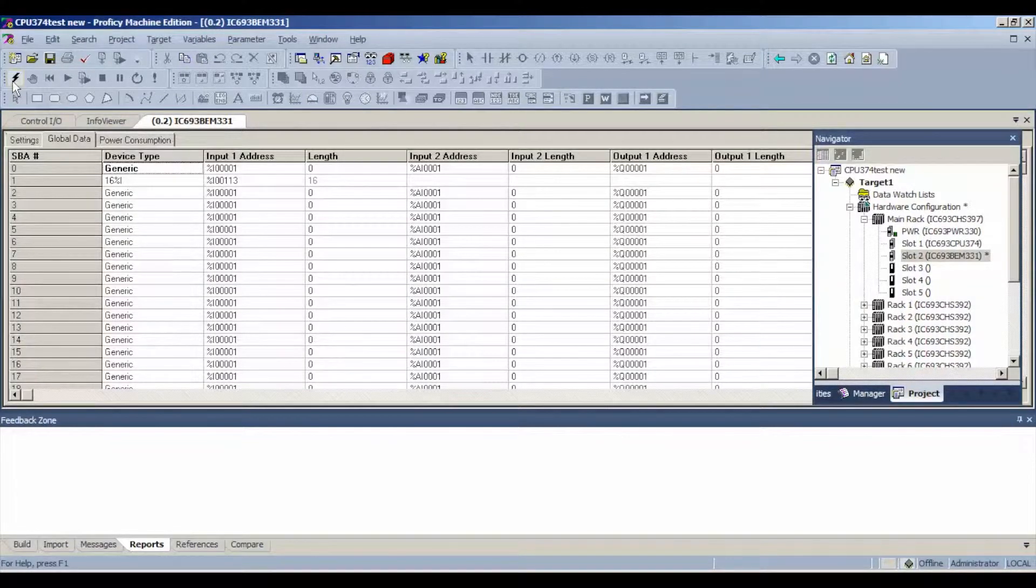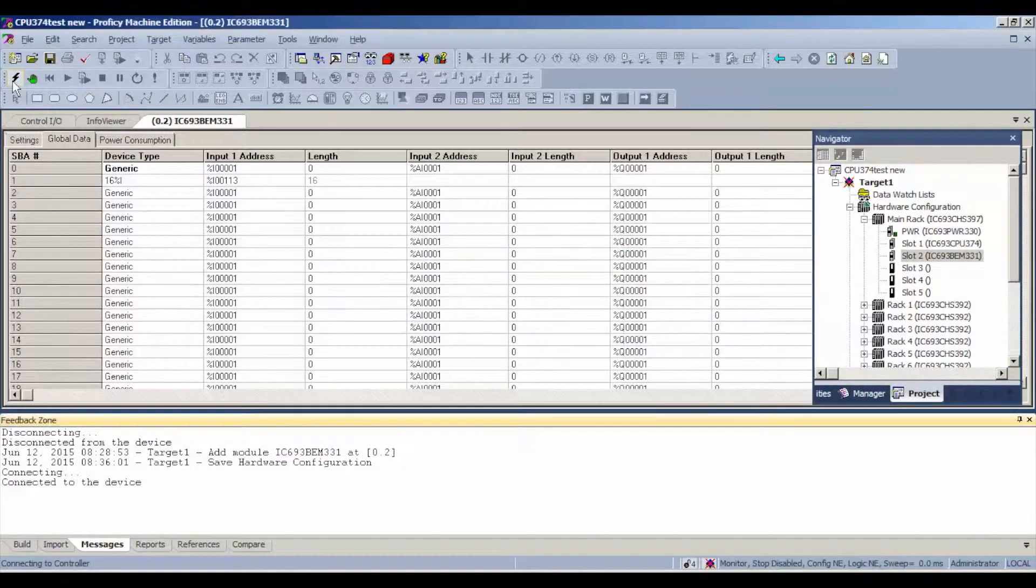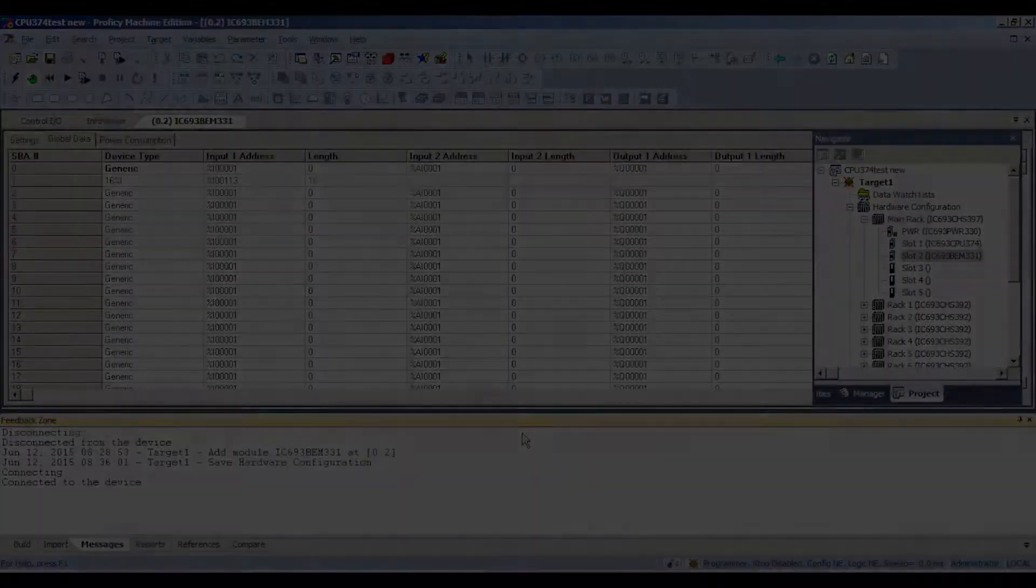Now we're going to connect up to the processor by tapping the online offline button. Then we're going to go to toggle it online. That's the green hand print. Then we're going to pause here for just a second.